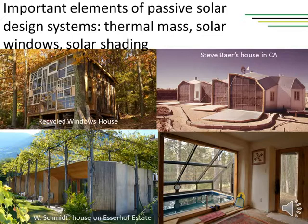We can see this principle alive on the pictures on the left side. The bottom left picture is a passive house made of plastered straw bale on Erzerhof estate by Swiss architect Werner Schmidt. On the right picture below, we can see a swimming pool as thermal mass in an attached sun space.